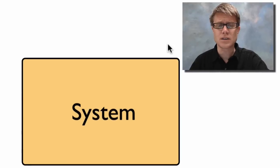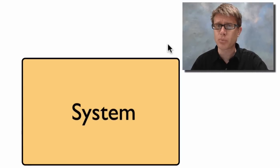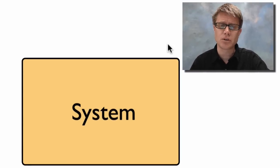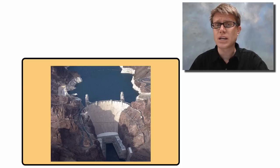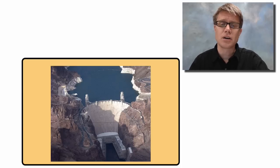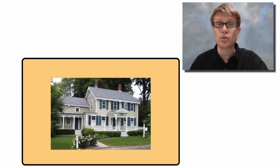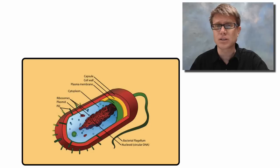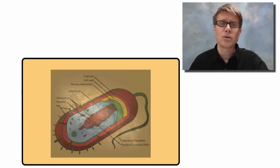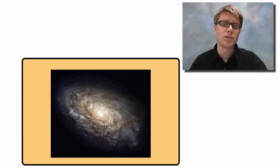What is a system? A system is a portion of the universe that's separate from the rest of the universe. A system could be a reservoir and a dam holding the water back, or it could be your house, or even a room in your house. But it also could be at the level of a small cell — like a bacterial cell — or even at the level of a galaxy.